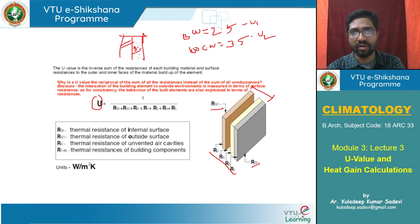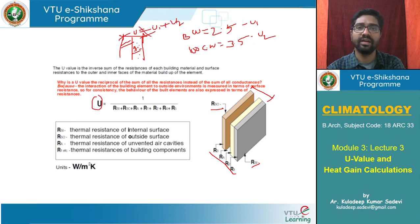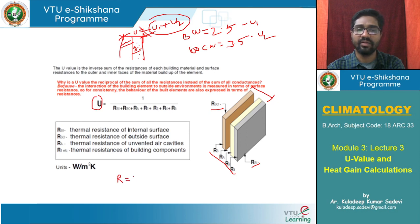The overall U-value of a combination of layers cannot be found by adding U1 plus U2 directly. We need to understand that conductance is not directly additive — only resistance is. So R_total = R1 + R2 + R3..., which also includes the outside surface resistance and the inner surface resistance. Once we know R, U = 1/R.